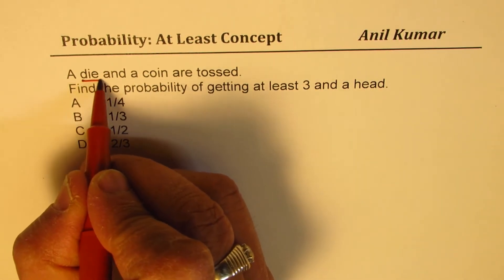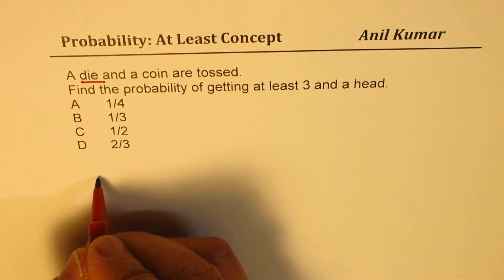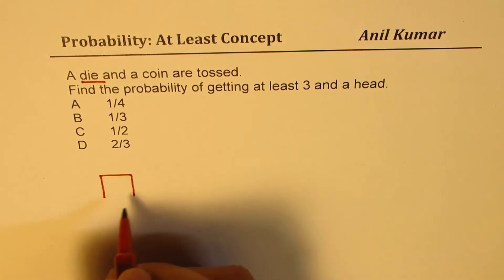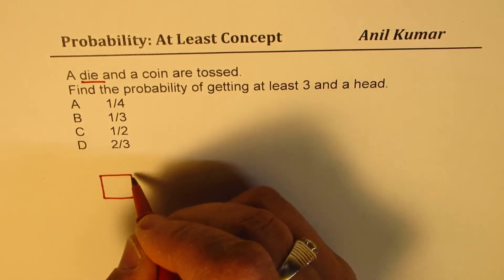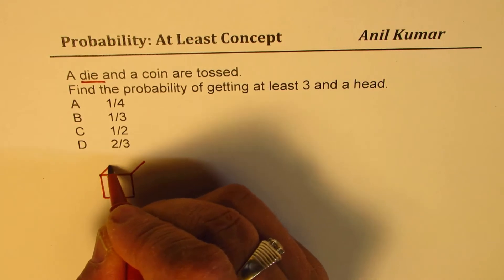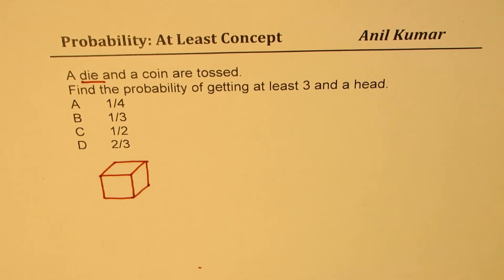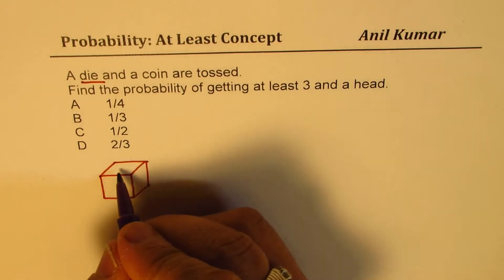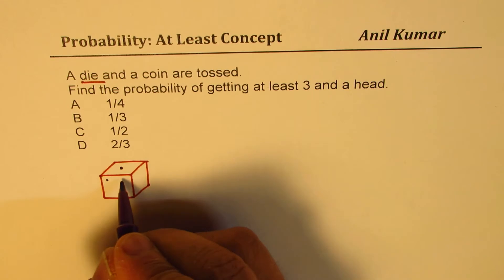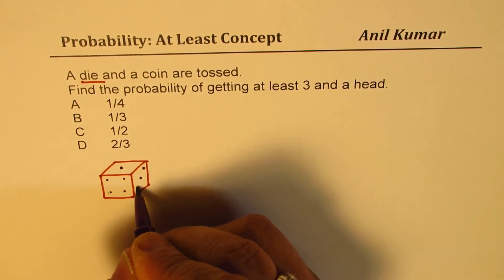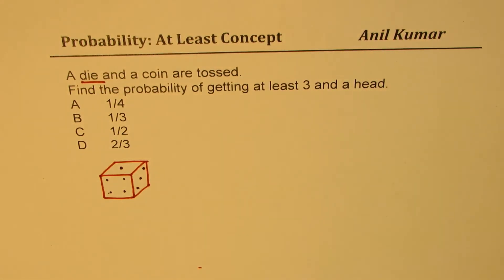When you are saying a die, we are talking about a fair die which is kind of like this. So we have a dice here. They are tossed, and we need the probability of getting at least three and a head.